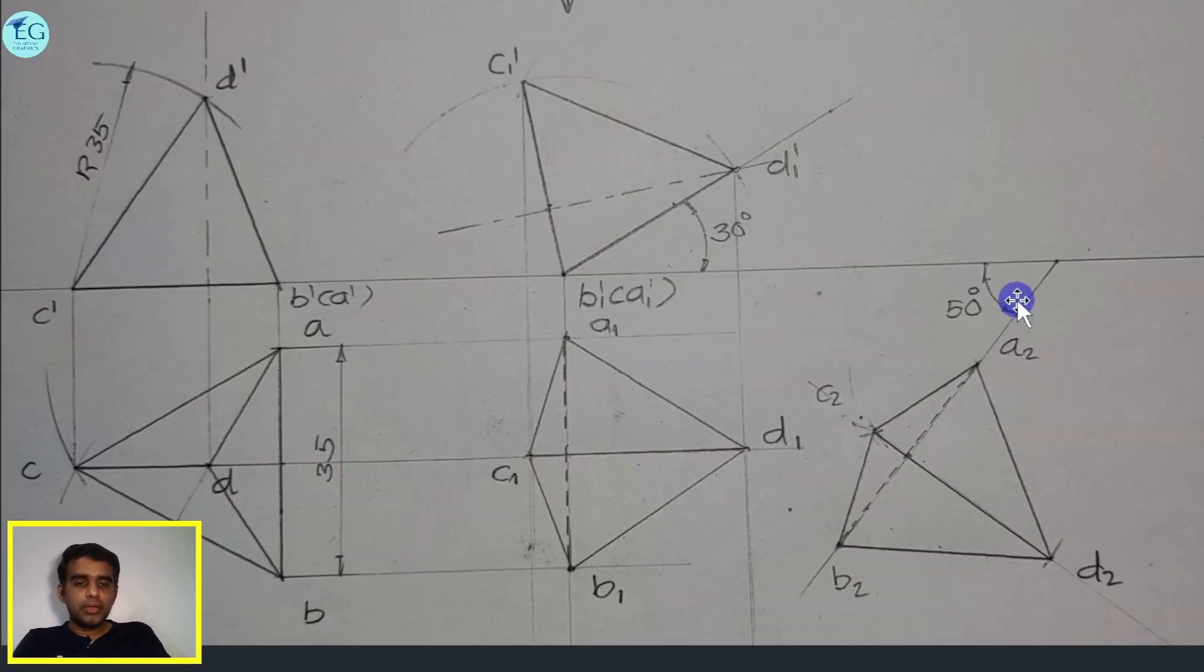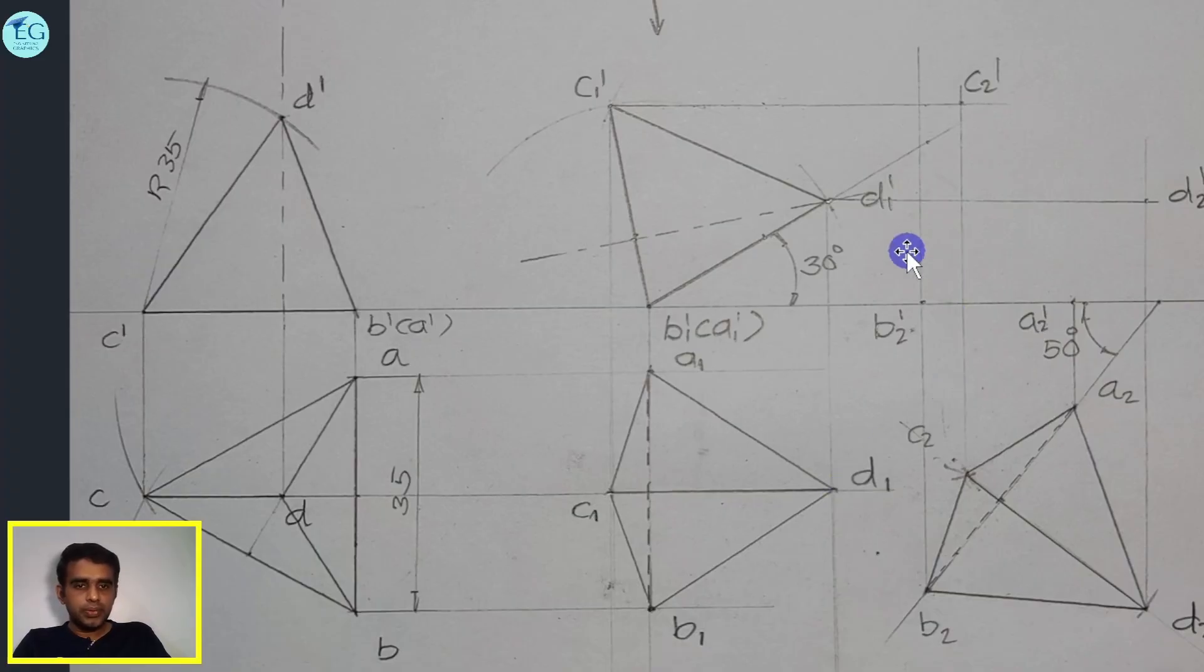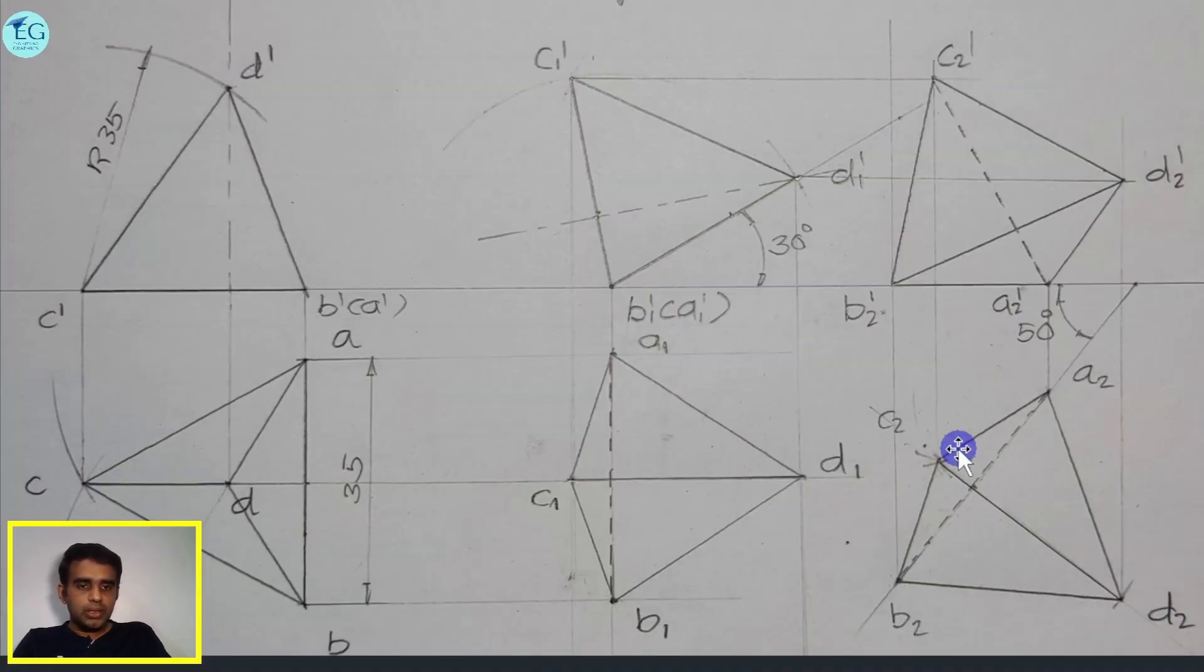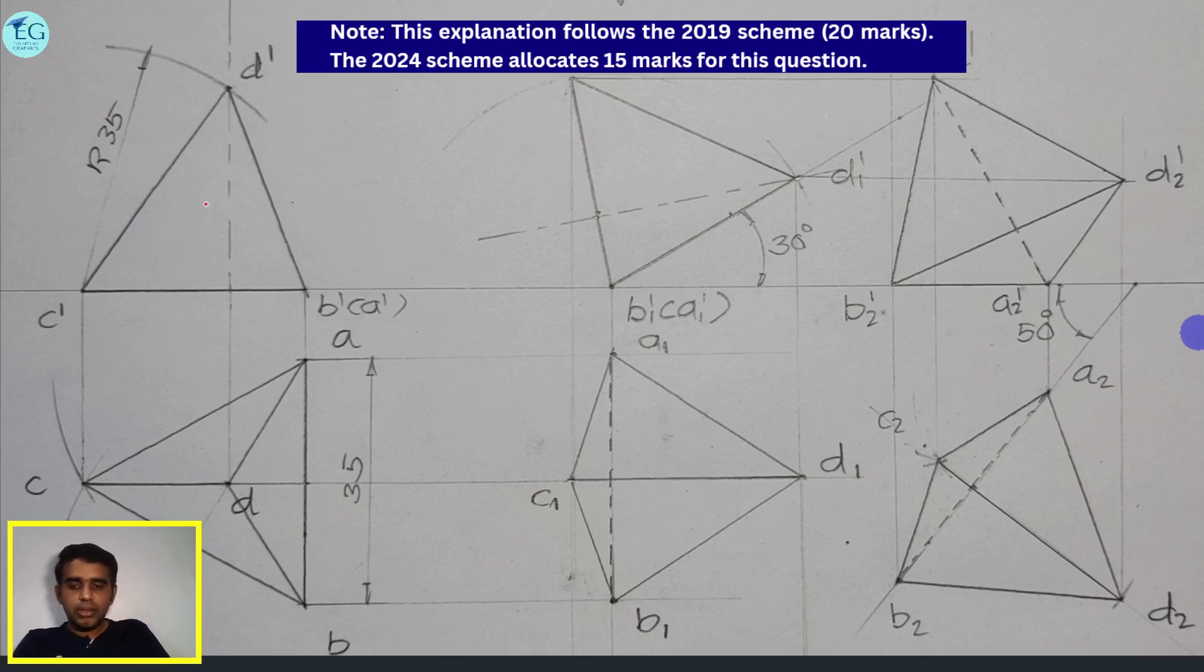AB1 true length is 35. That is the apparent angle of 50 degrees. The true length points are A2, B2. Then locate points C2, D2. The corresponding points are B2, C2, D2, and B2, C2, A2. C2, A2 dash, that is a dash line. This is the answer. We will draft the final answer.